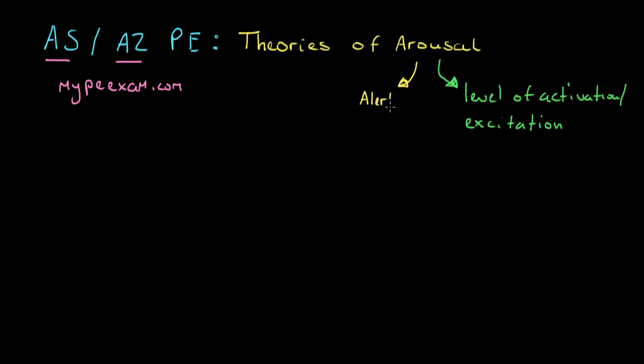So this is alertness. And the part of our brain which controls our activation, our alertness, is something called our RAS, which stands for reticular activating system.